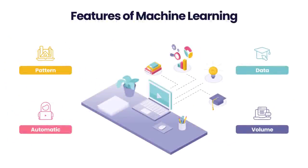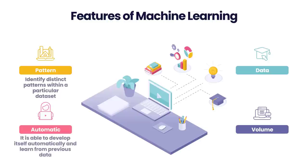Features of machine learning: data is used as the primary tool in machine learning to identify distinct patterns within a particular dataset. It is able to develop itself automatically and learn from previous data. It is a technology that is powered by data. Data mining and machine learning share many similarities, including the fact that both processes deal with large amounts of data.